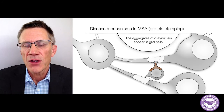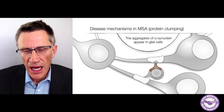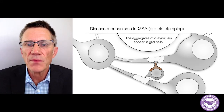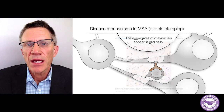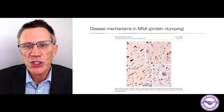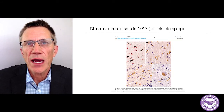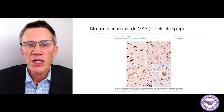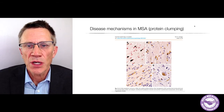Normally, the oligodendroglia cells have very little alpha-synuclein in them, so something must go wrong. This is what it looks like in the microscope — a paper by the legendary neuropathologist Kurt Gellinger, just published a few weeks ago, describing the brown stain in different brain regions of a person with MSA: alpha-synuclein clumps.